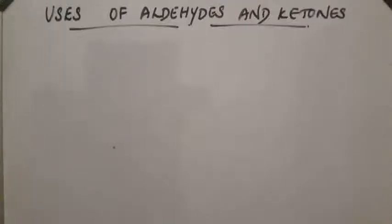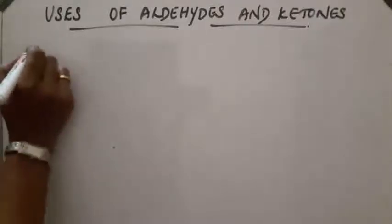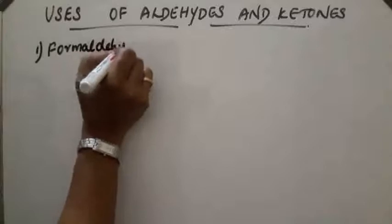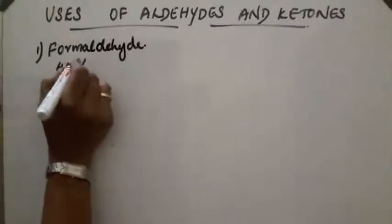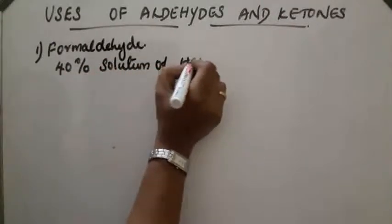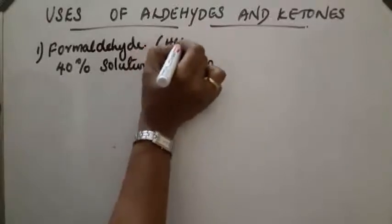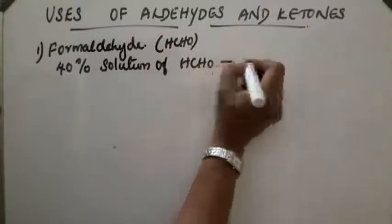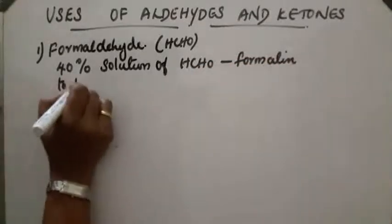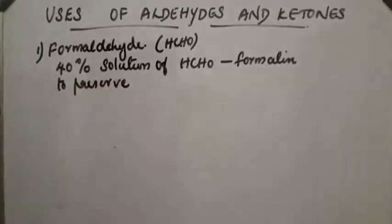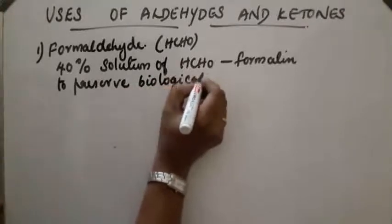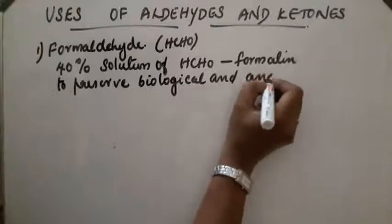Uses of aldehydes and ketones. First one: formaldehyde. A 40% solution of formaldehyde is called formalin (HCHO). It is used to preserve biological and anatomical specimens.